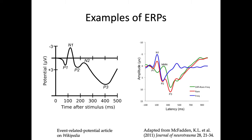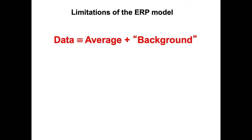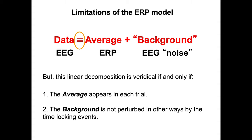These are typical ERP analyses and the assumption is that the data, the EEG data, is equal to an average plus some background noise. The EEG is equal to the ERP plus some EEG noise, but this linear decomposition is only true if the average appears in every single trial and the background is not perturbed in any way by the event. This is what EEGLAB is about. Is this assumption true or is it not true? I'll show you in the next few slides examples that show it's not always true and most often it's not true.